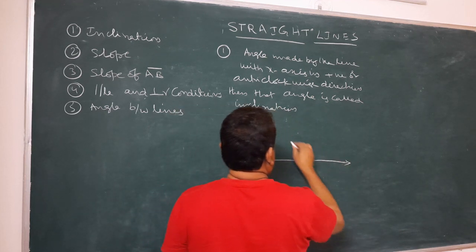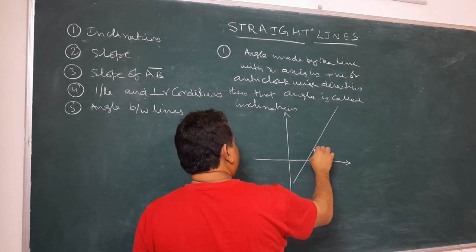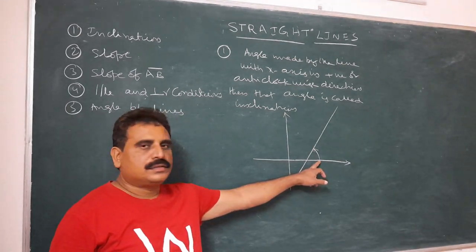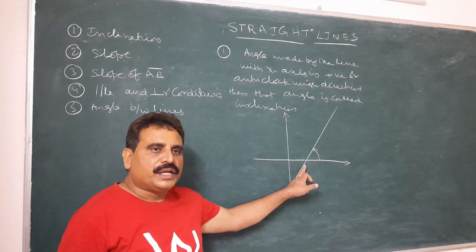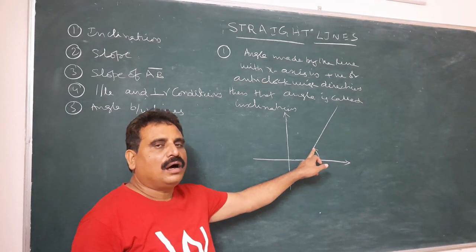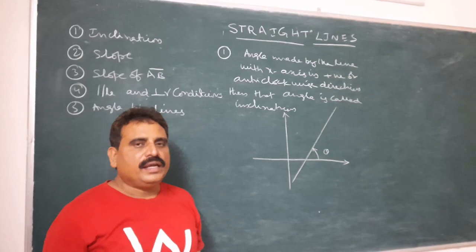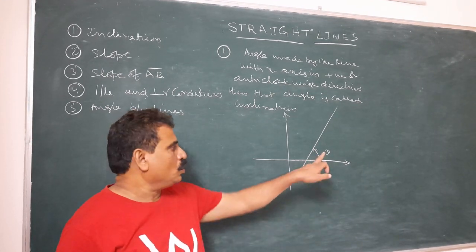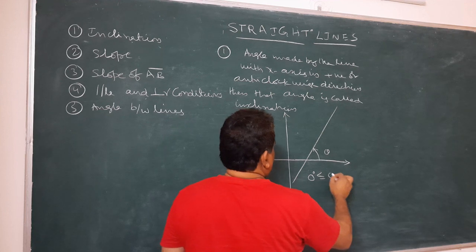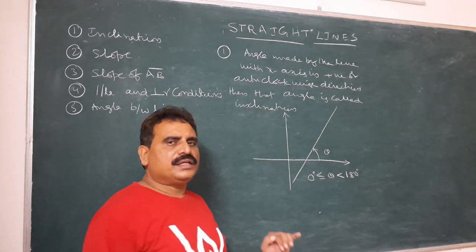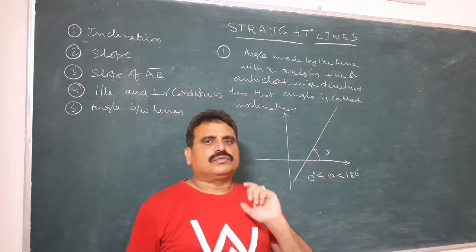Here is the x-axis and y-axis. This line makes an angle — direction is also important. There are two directions from x-axis to the line: positive direction and negative direction. We count only the positive (upward or anti-clockwise) direction — that is inclination. The range of theta is 0 ≤ θ < 180°. Inclination never equals 180°; if it were 180°, we count it as 0.